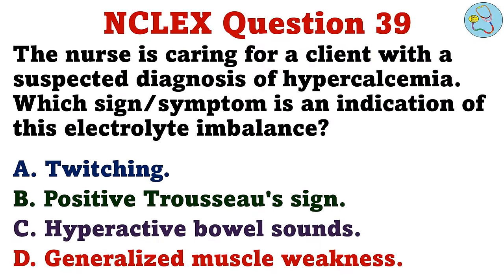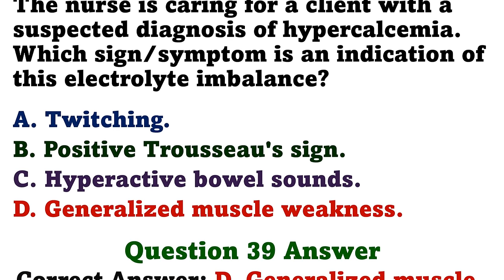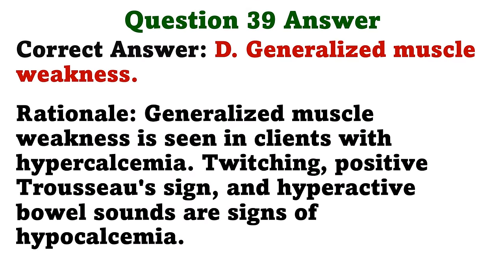The nurse is caring for a client with a suspected diagnosis of hypercalcemia. Which sign or symptom is an indication of this electrolyte imbalance? A. Twitching. B. Positive Trousseau's sign. C. Hyperactive bowel sounds. D. Generalized muscle weakness. The correct answer is D: generalized muscle weakness. Generalized muscle weakness is seen in clients with hypercalcemia. Twitching, positive Trousseau's sign, and hyperactive bowel sounds are signs of hypocalcemia.